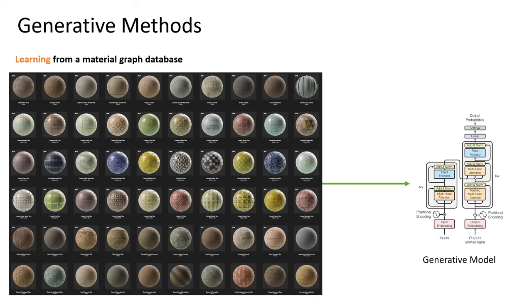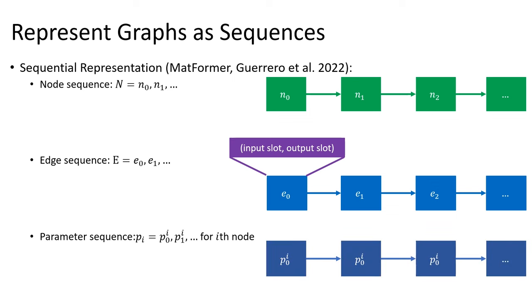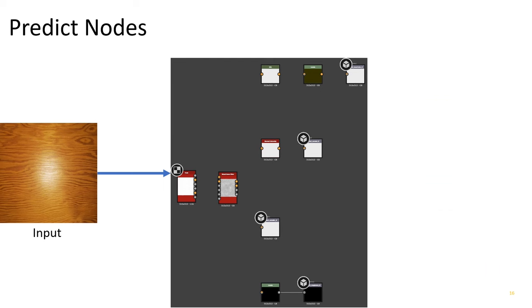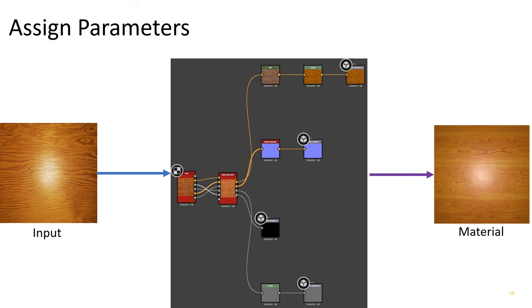However, material proceduralization is based on a template graph structure. Can we generate the graph structure by learning from the material database? Our generative model is partially built upon Matformer. A graph can be represented as different sequences for nodes, edges, and parameters. We leverage transformers to generate graph sequences. Given an image input, the model first generates a node sequence, and then generates an edge sequence that connects these nodes. And finally, with the parameter sequence generated, the rendered graph output can match the appearance of the input.